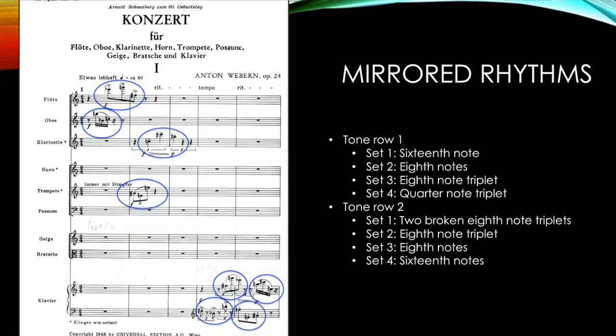In addition to the mirrored sets in tone row 1 and tone row 2, Webern also chooses to use mirrored rhythms. In tone row 1, as the sets progress, the rhythmic durations increase. However, in tone row 2, each subsequent set features a shorter rhythmic duration. In this way, the rhythmic durations of tone row 1 and tone row 2 mirror one another.